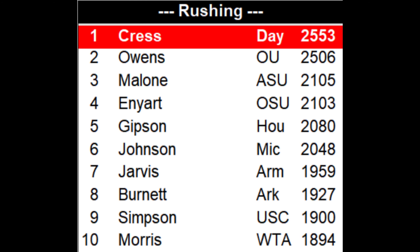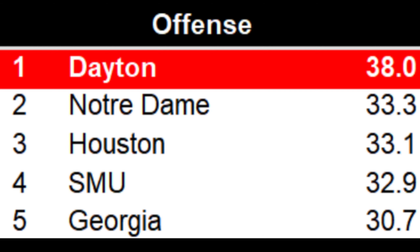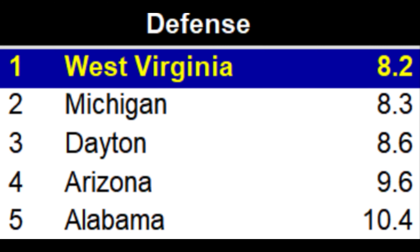Kress wound up leading the league in rushing. OJ Simpson with USC came in 9th with 1,900 yards. Bill Montgomery with Arkansas had the best passing rating — he racked up over 3,000 yards and 22 touchdowns. Dayton had the best offense in the entire project, while West Virginia had the best defense. Of course, it's hard to compare those teams directly since they didn't play against each other.